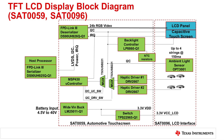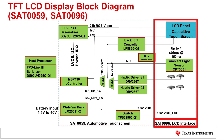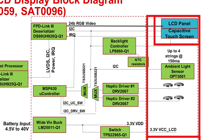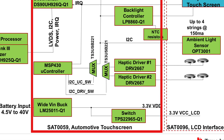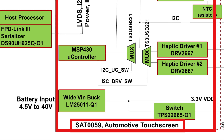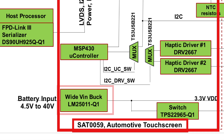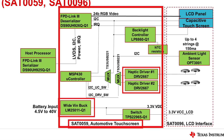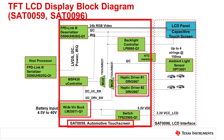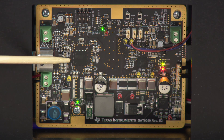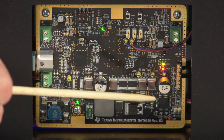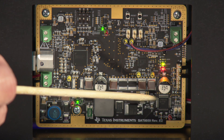It actually consists of two boards. One is the SAT-0096, which consists of the LCD panel as well as the ambient light sensor device. The other main board is the SAT-0059, which consists of several different devices: one is the 12V buck converter, another one is the haptics drivers, as well as two other devices — the DS90UH926, which is our 720p deserializer family, and the LP8860, which is the backlighting controller.